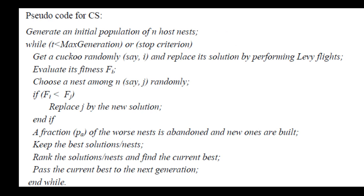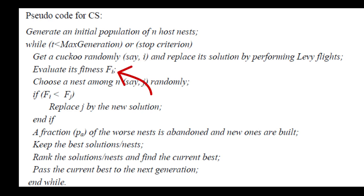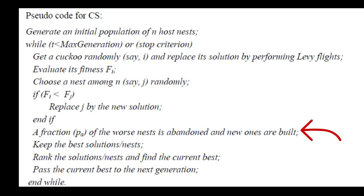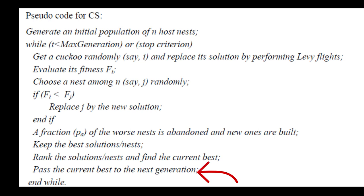First we will generate N host nests. In this algorithm, nests and eggs represent the population — potential solutions are represented as nests, and individual solutions within a nest are like eggs. This algorithm follows certain rules: a cuckoo can lay only one egg at a time in a randomly chosen nest. Get a cuckoo randomly and replace its solution by performing Lévy flight, evaluate its fitness, then choose a nest among N randomly, compare the fitness value, and replace the solution. Check the fraction pa — the fraction of the worst nests is abandoned and new ones are created. Keep the best solution, rank solutions, find the current best, pass to the next iteration, and repeat until the stopping condition is met.